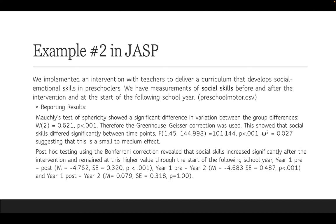Post hoc testing using the Bonferroni correction revealed that social skills increased significantly after the intervention and remained at this higher value through the start of the following school year. We report pairwise differences: year one pre-intervention with year one post-intervention — mean difference, standard error, and p < 0.001; year one pre-intervention to year two — again significant with p < 0.001; and year one post to year two — our non-significant result, as social skills stayed at the same level post-intervention. At this point, you are ready for the homework problems.